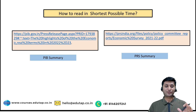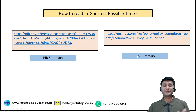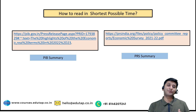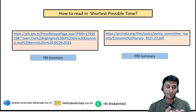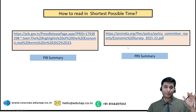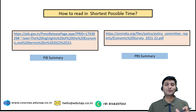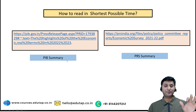I would request you to go only through the PIB Summary and PRS Summary. If you are doing self-preparation, do not even think about going through the Economic Survey in detail if you are short on time. PIB Summary and PRS Summary on the Economic Survey are really good sources.